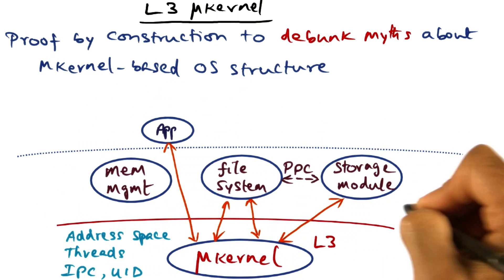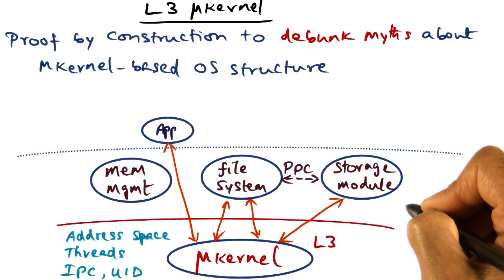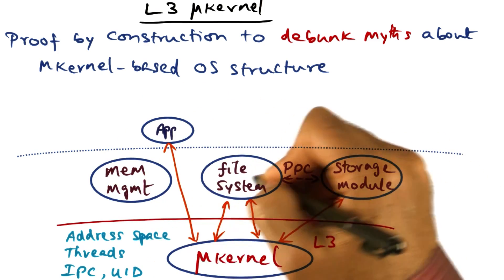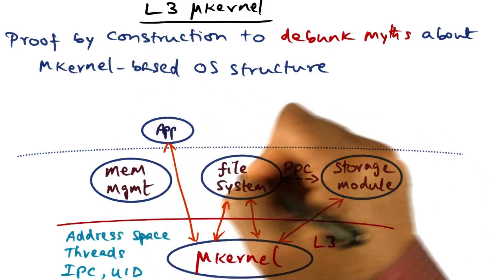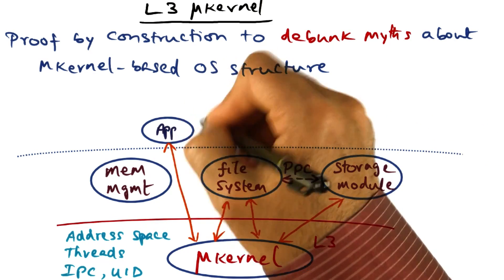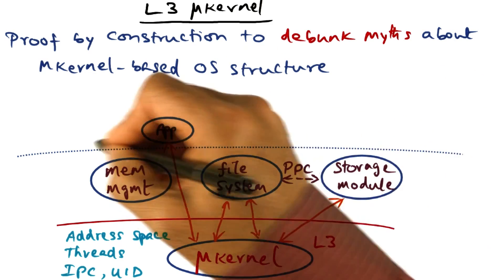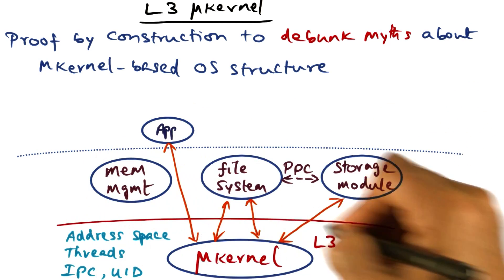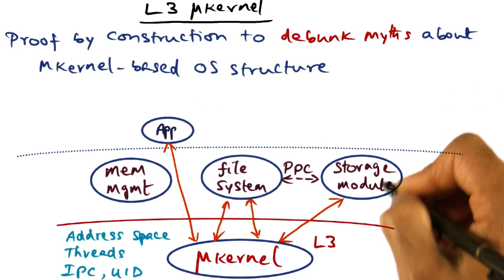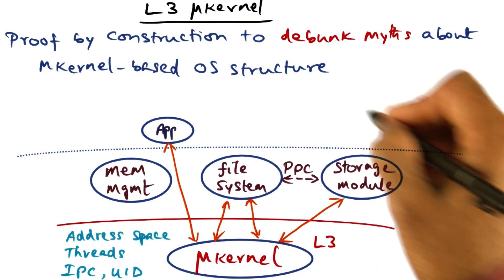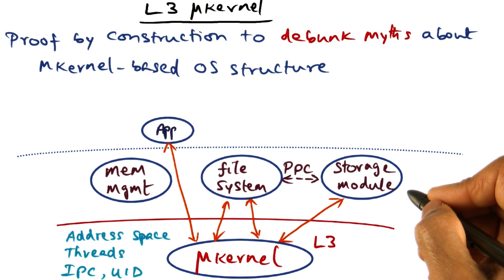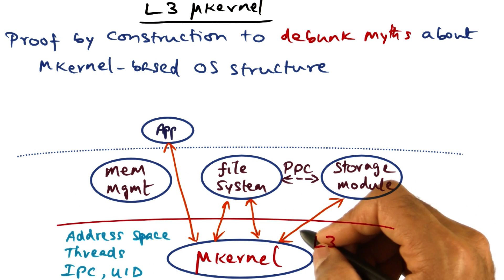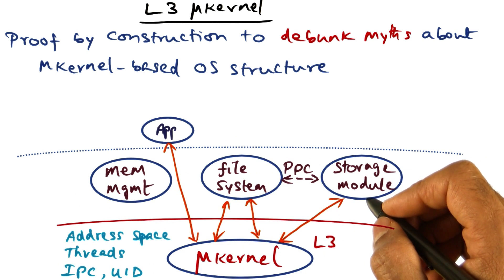Now let's talk about the system services. As mentioned previously, the system services have to be distinct protection domains, protected from one another and protected from the applications that live on top of the operating system. We have a hard line between the applications and the servers providing these services, and the microkernel. This is the structure of a microkernel-based operating system.